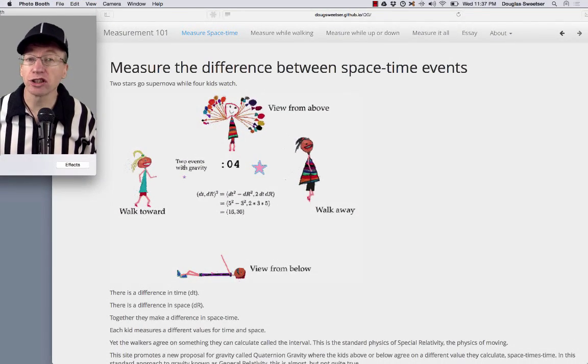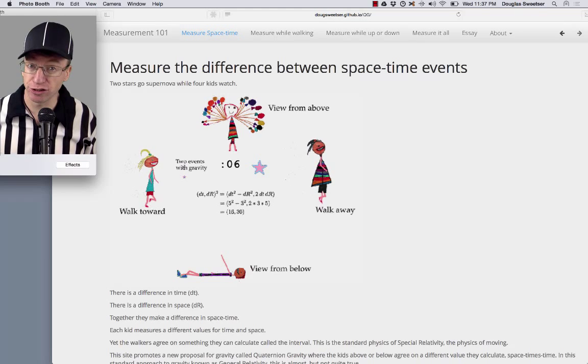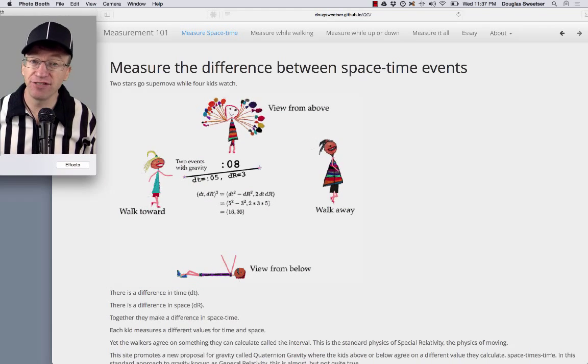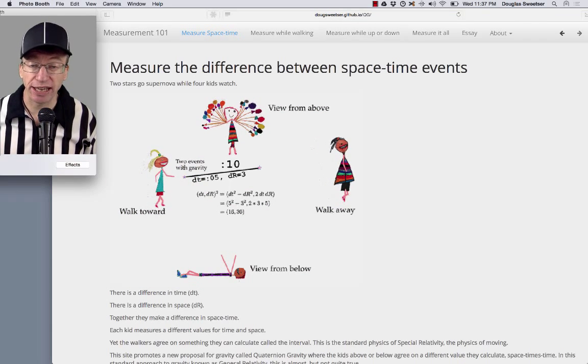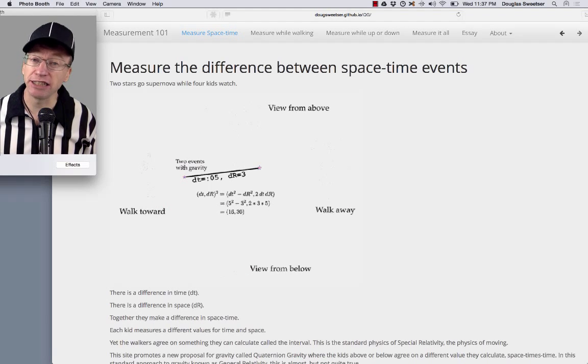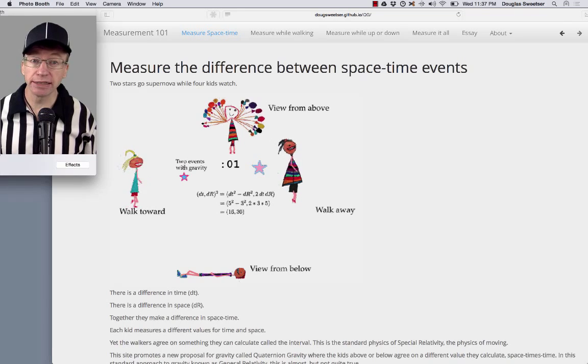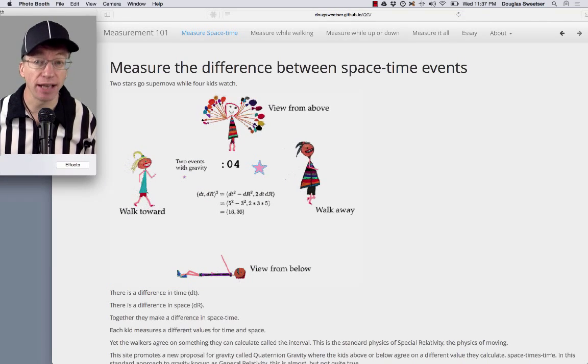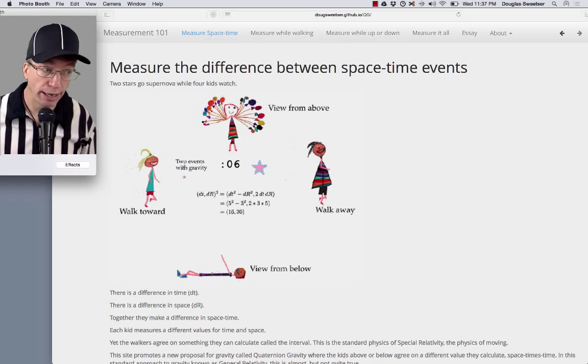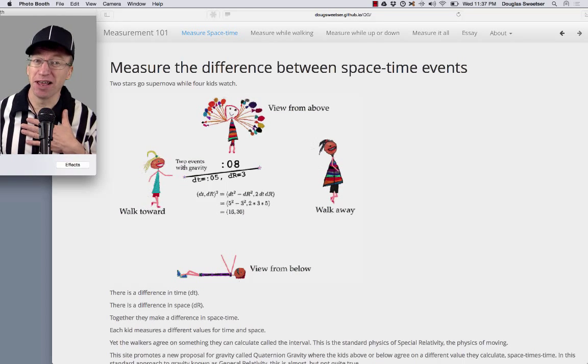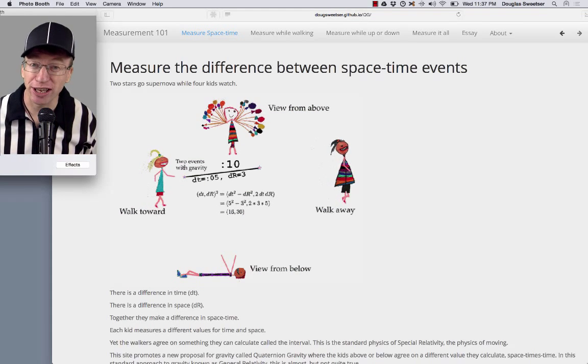Now, the walkers agree about the interval. And that's the physics of special relativity that Einstein developed in 1905. The above and the below kids, they agree on space times time. Or, at least, that's my new proposal that I call quaternion gravity.